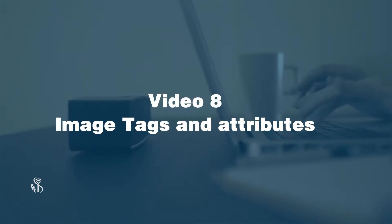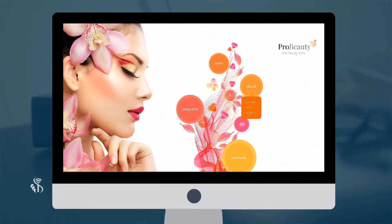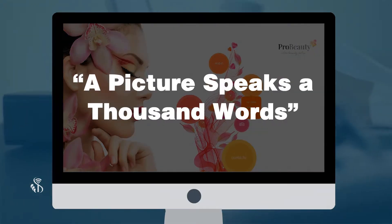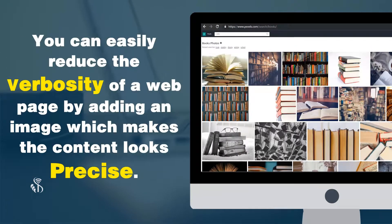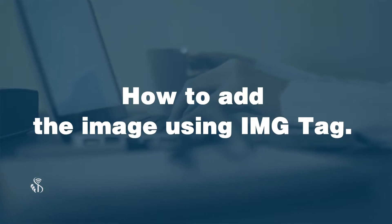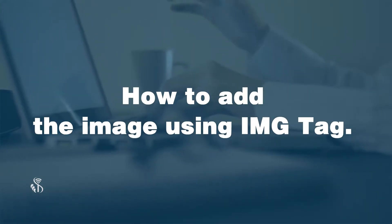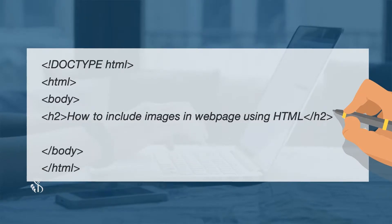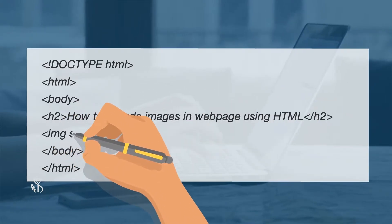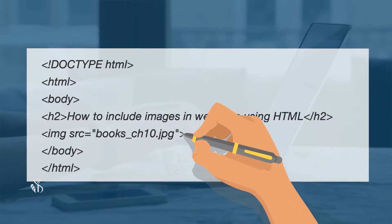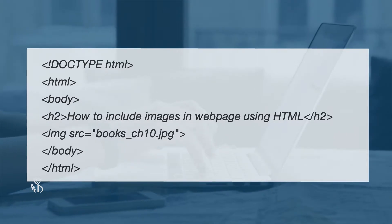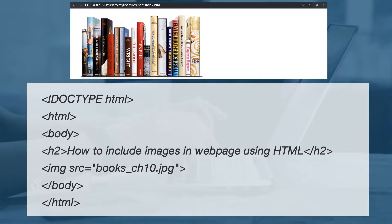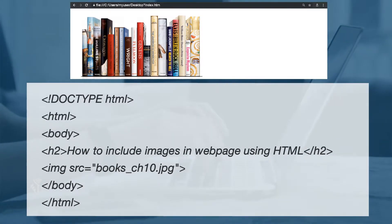Video 8: Image tags and attributes. Images bring a different look to the entire web page — a picture speaks a thousand words. You can reduce the verbosity of a web page by adding an image, making content look precise. To add an image using the img tag: image source is equal to double inverted comma, image name dot image format, double inverted comma. The output is as shown in this video.